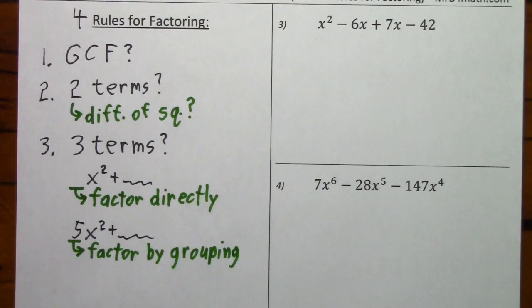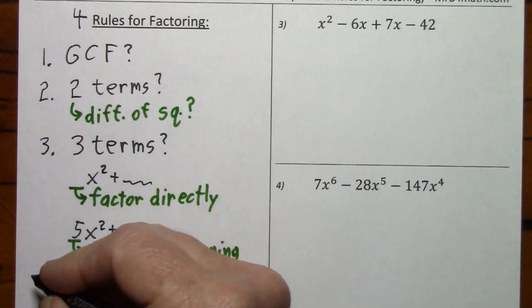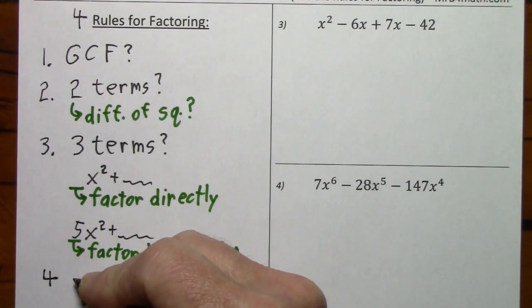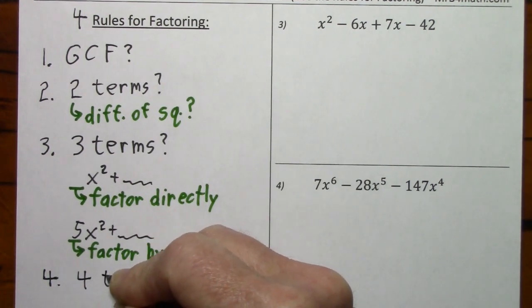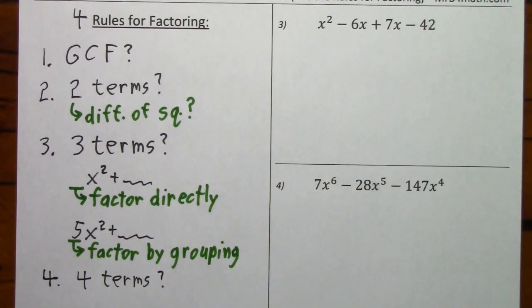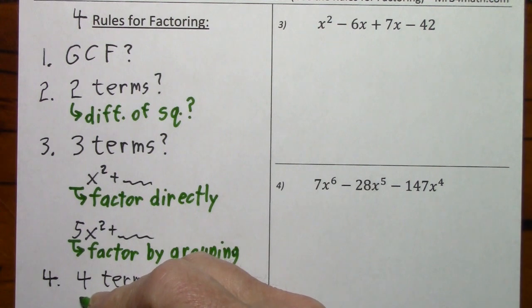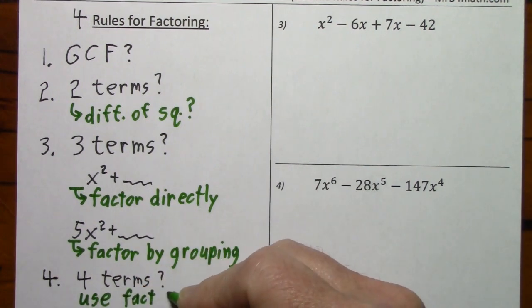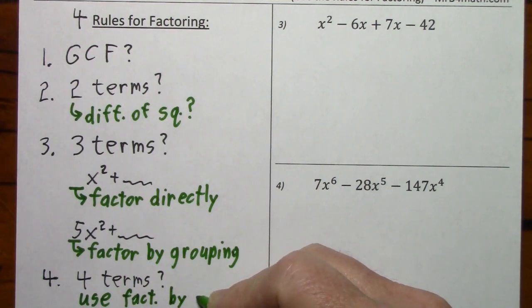And if you don't have a total of three terms, number four: do you have a total of four terms? If you do, you can use factor by grouping.